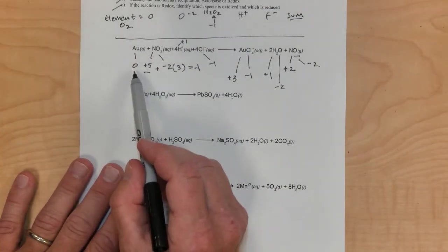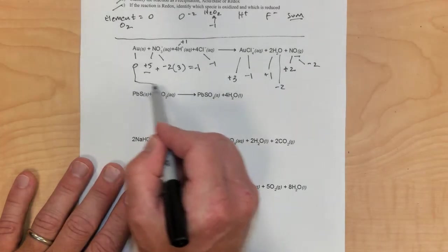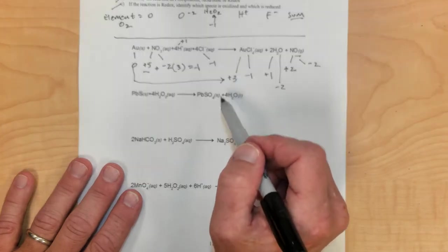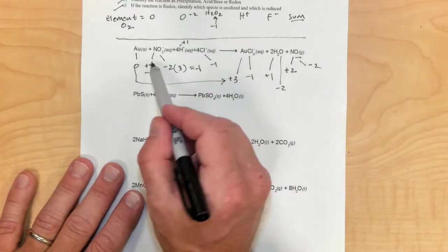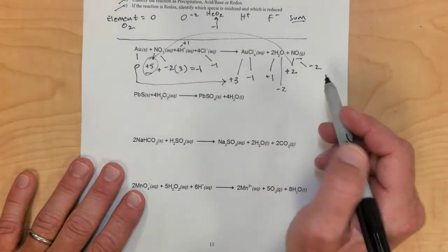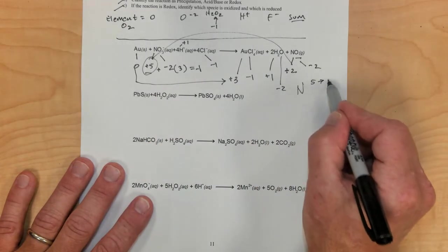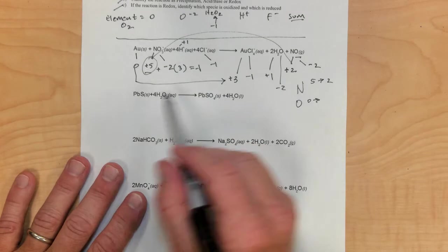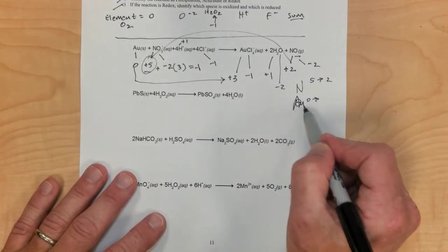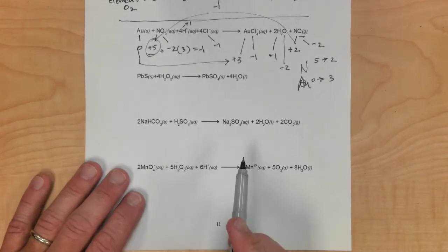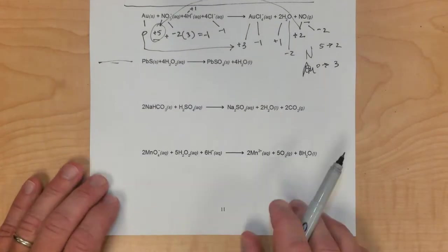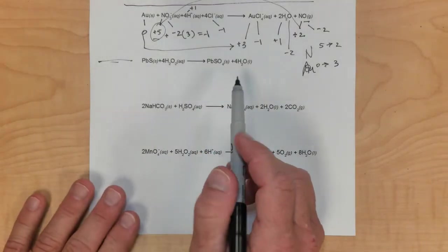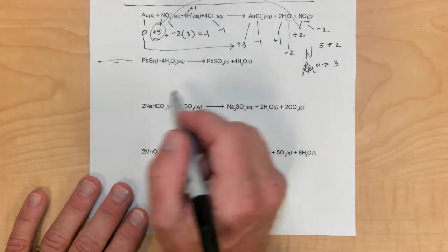We can see that the oxidation numbers change from one side to the other. Gold goes from 0 to positive 3, and nitrogen goes from positive 5 to positive 2. So nitrogen goes down in charge from 5 to 2 — it's reduced — and gold goes from 0 to positive 3 — it's oxidized. That's the first one. As we go along, I'll identify the redox reactions by assigning oxidation numbers as quickly as possible.